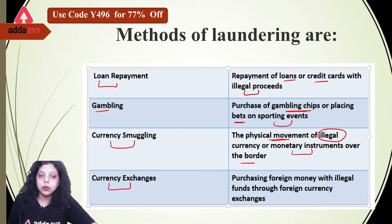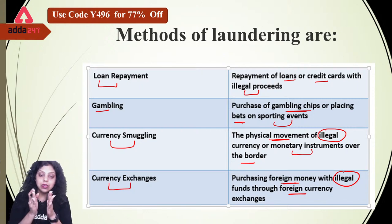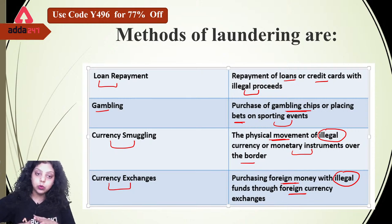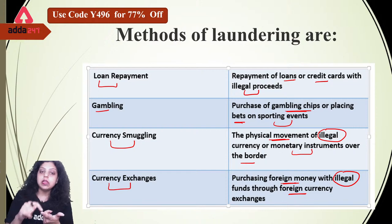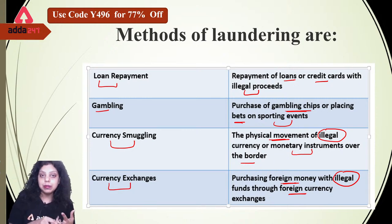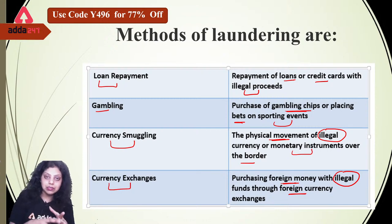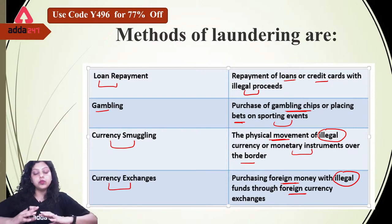Next is currency exchanges: purchasing foreign money with illegal funds through foreign currency exchange. So when you deposit a whole amount in the banking system, there will be an anti-money laundering officer monitoring your accounts who can find that this is a suspicious transaction. So what can you do? You can repay your loan amount or credit card payments with illegal money, invest in gambling, invest in currency smuggling, or invest your criminal money in currency exchanges by purchasing foreign money. These are the certain methods which can be used for laundering under money laundering.